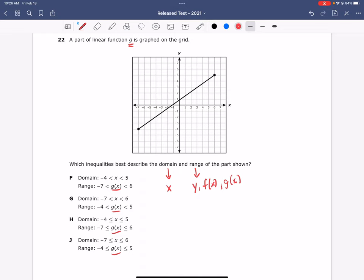What we want to recognize is that at the endpoints for these graphs, we have closed circles, which means we're going to have less than or equal to on both of the numbers associated with the domain and range.